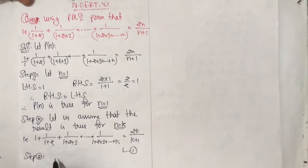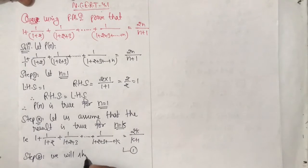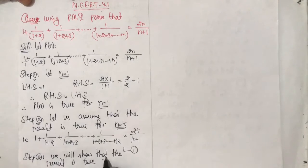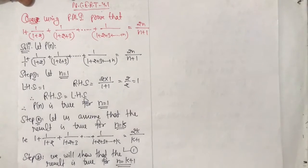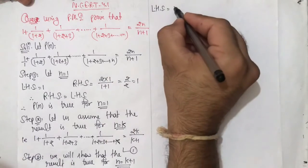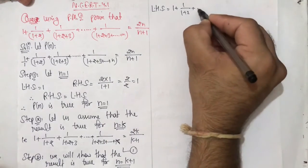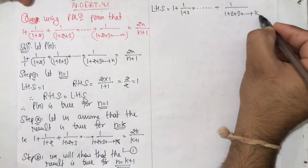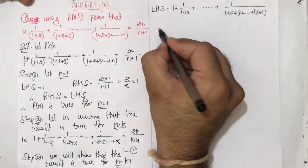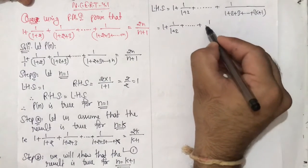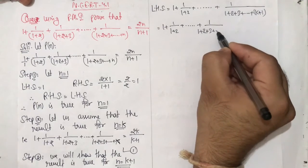Step 3: We will show that the result is true for n equal to k plus 1. So we take LHS with n replaced by k plus 1: 1 plus 1 upon (1 plus 2) and so on, 1 upon (1 plus 2 plus 3 and so on up to k plus 1). This equals the previous terms up to k, plus the new last term 1 upon (1 plus 2 plus 3 and so on up to k).